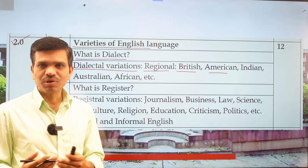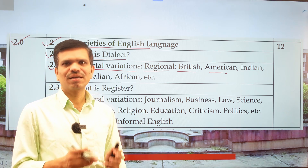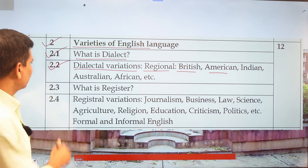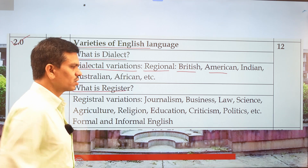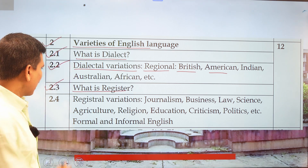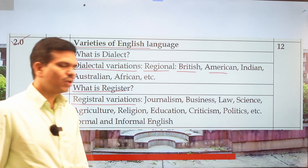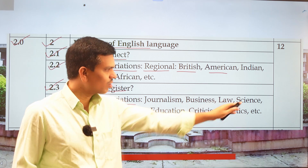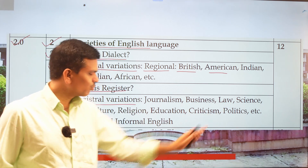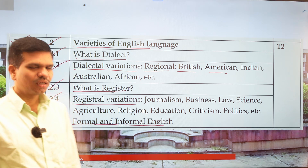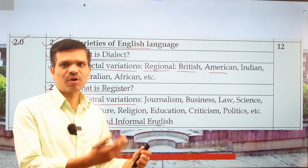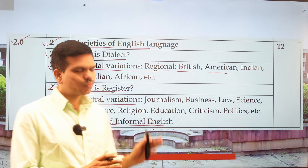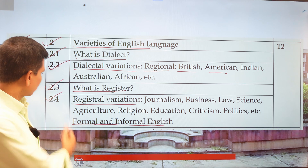In British English, there are two major dialects: Cockney dialect and British RP (Received Pronunciation). In London you will find both these dialects. We will also consider what register is — its definition and meaning — and registral variation: language used in particular sectors such as journalism, business, law, science, agriculture, religion, education, criticism, and politics, as well as formal and informal English.